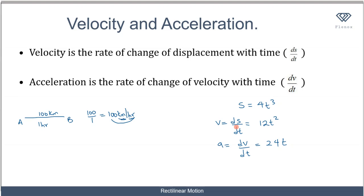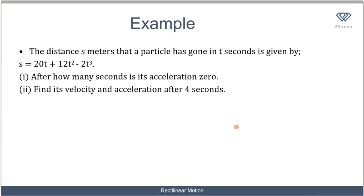Let's look at a practical example. The distance s in meters that a particle has traveled in t seconds is given by: s = 20t + 12t² - 2t³. The first part of the question asks us to find after how many seconds the acceleration is zero.